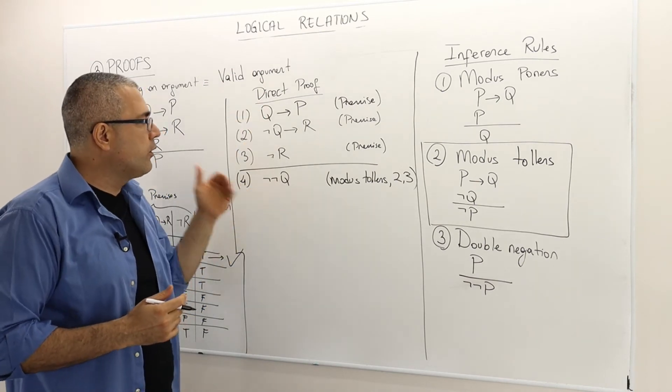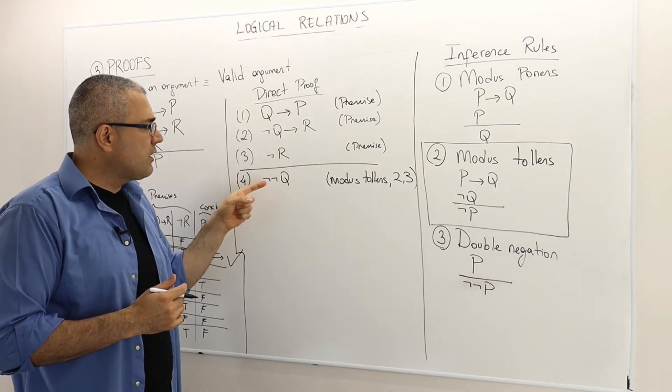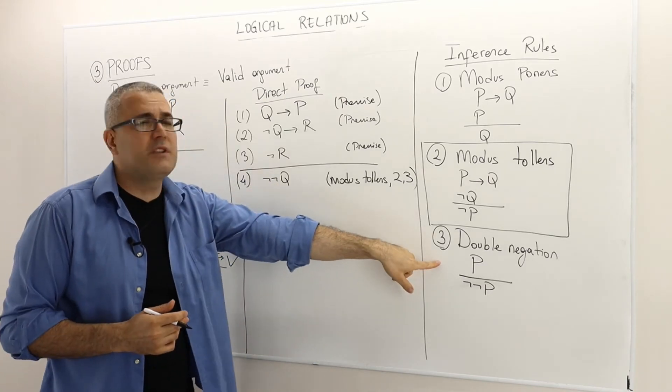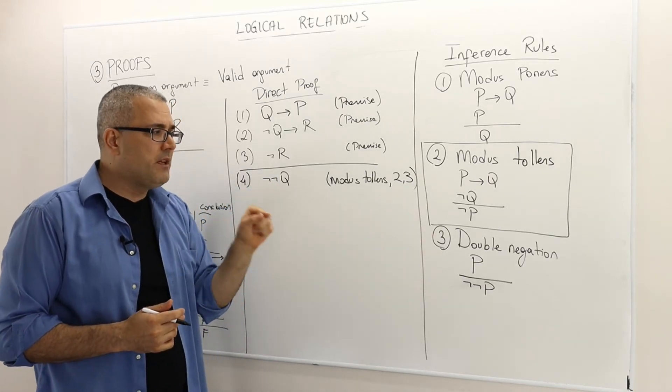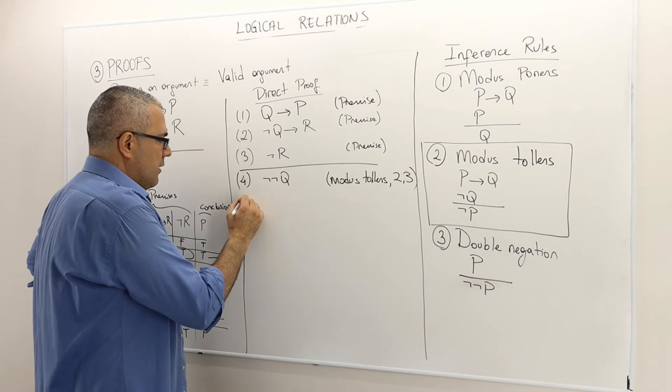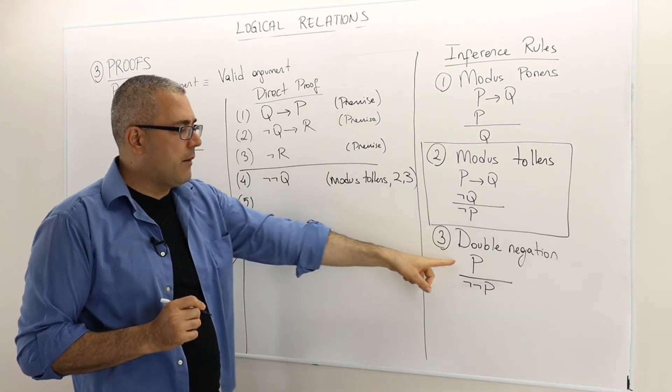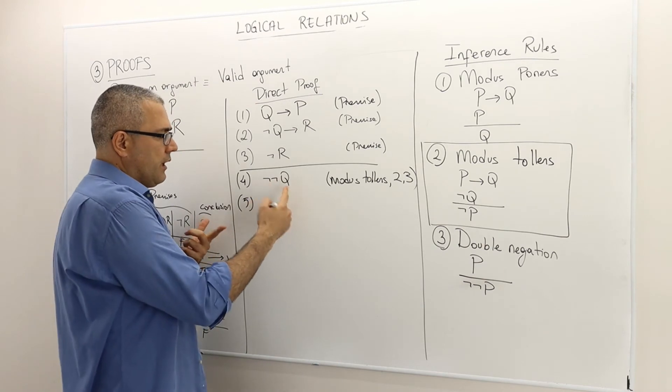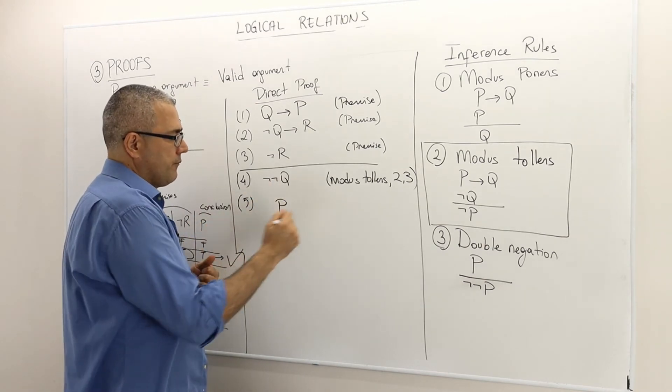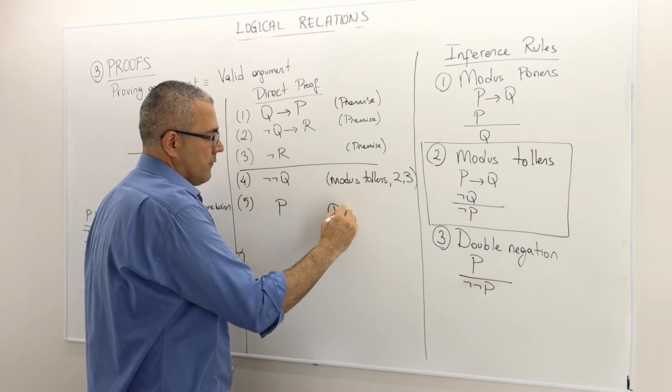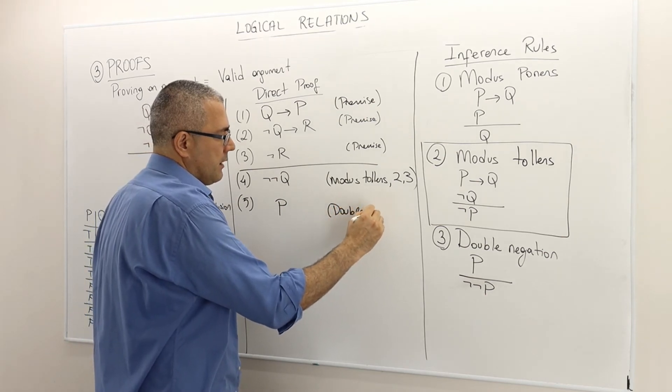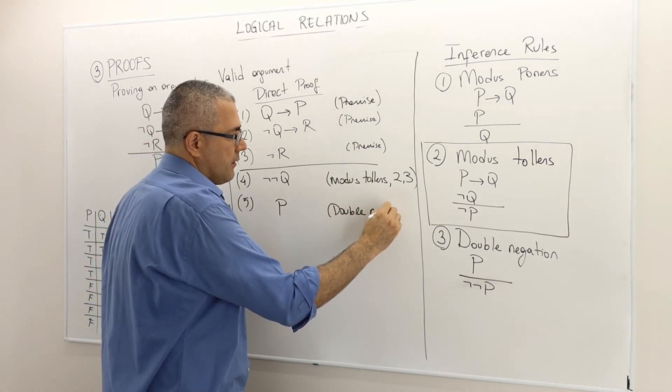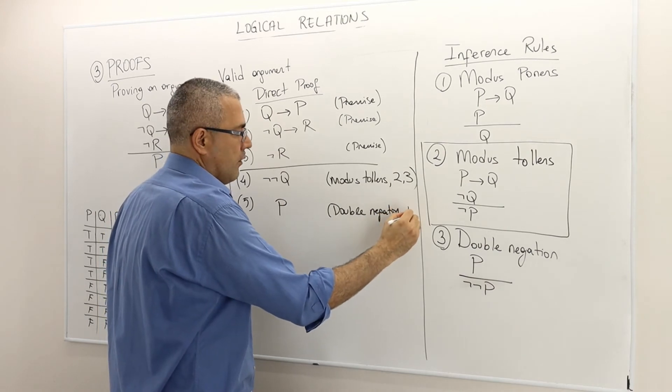So the not not Q, well, I can use this inference rule, the double negation. If I am double negating a statement, then it must be true. So if not not Q, well, that means Q. Double negation of four.